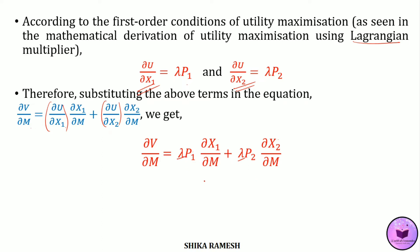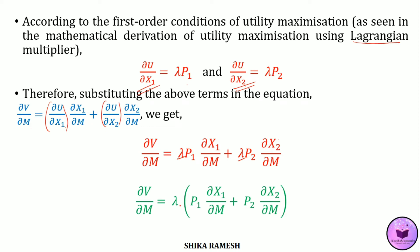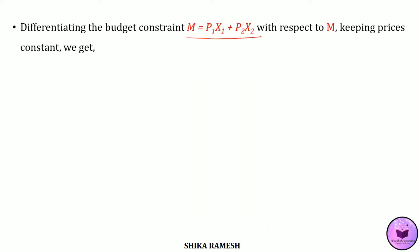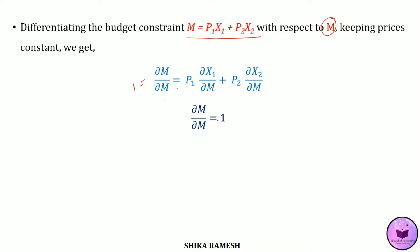Taking lambda as common, we get ∂v/∂m = lambda · [p1·(∂x1/∂m) + p2·(∂x2/∂m)]. Now differentiating the budget constraint m = p1·x1 + p2·x2 with respect to m, keeping prices constant, we get ∂m/∂m = p1·(∂x1/∂m) + p2·(∂x2/∂m). Since ∂m/∂m = 1, this can be rewritten as 1 = p1·(∂x1/∂m) + p2·(∂x2/∂m).